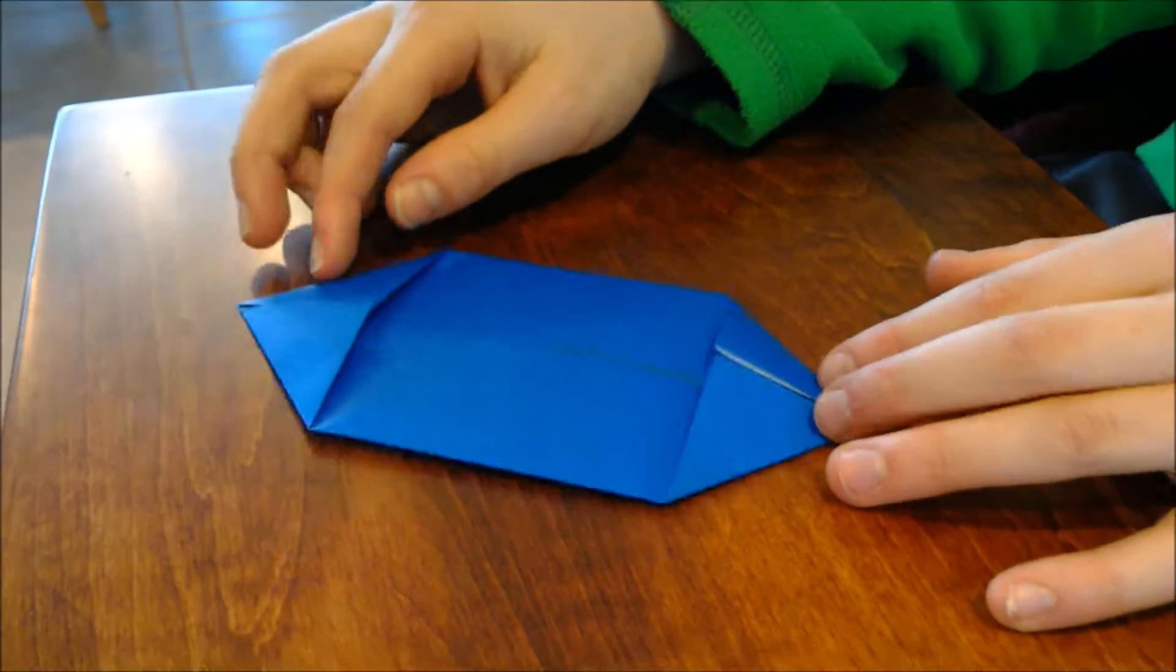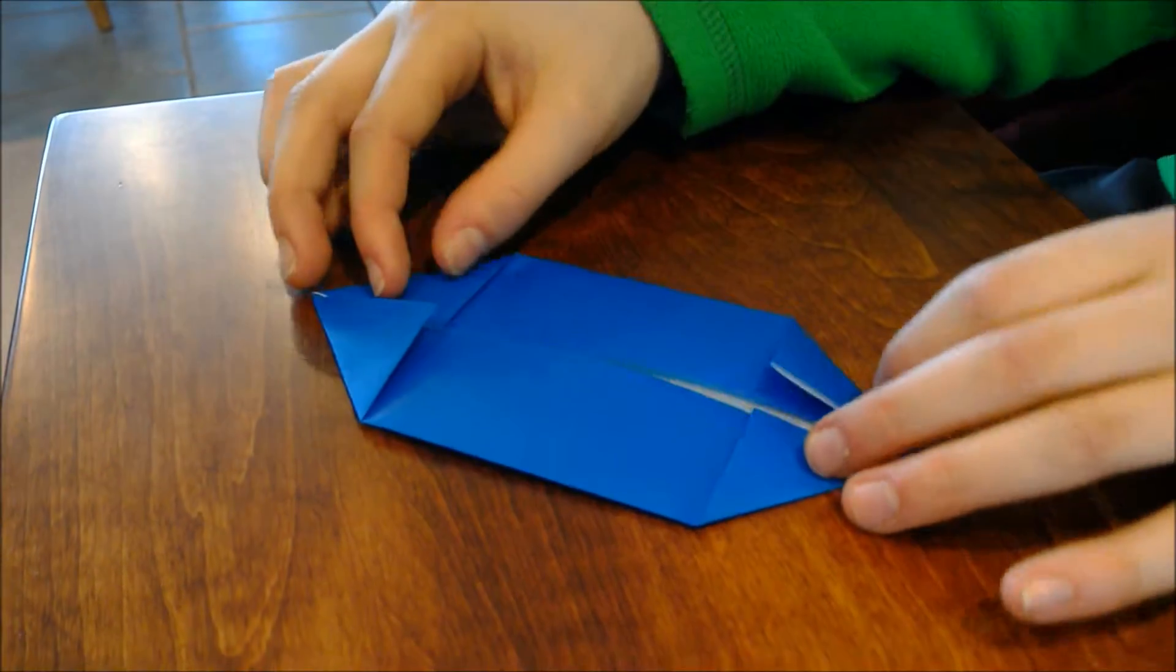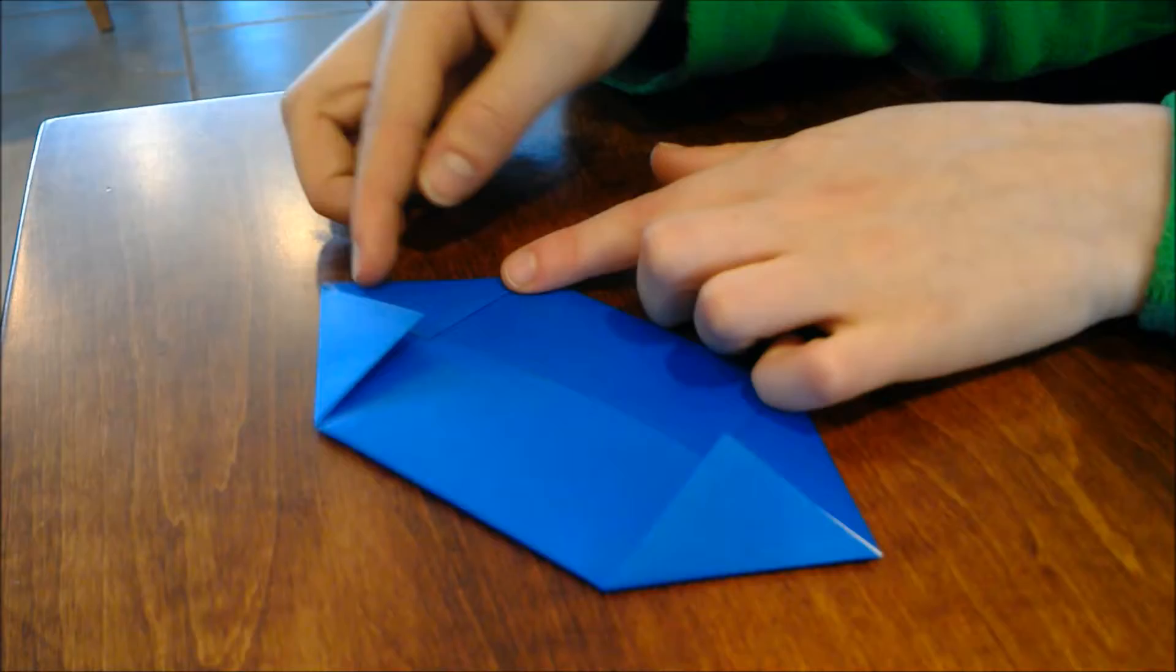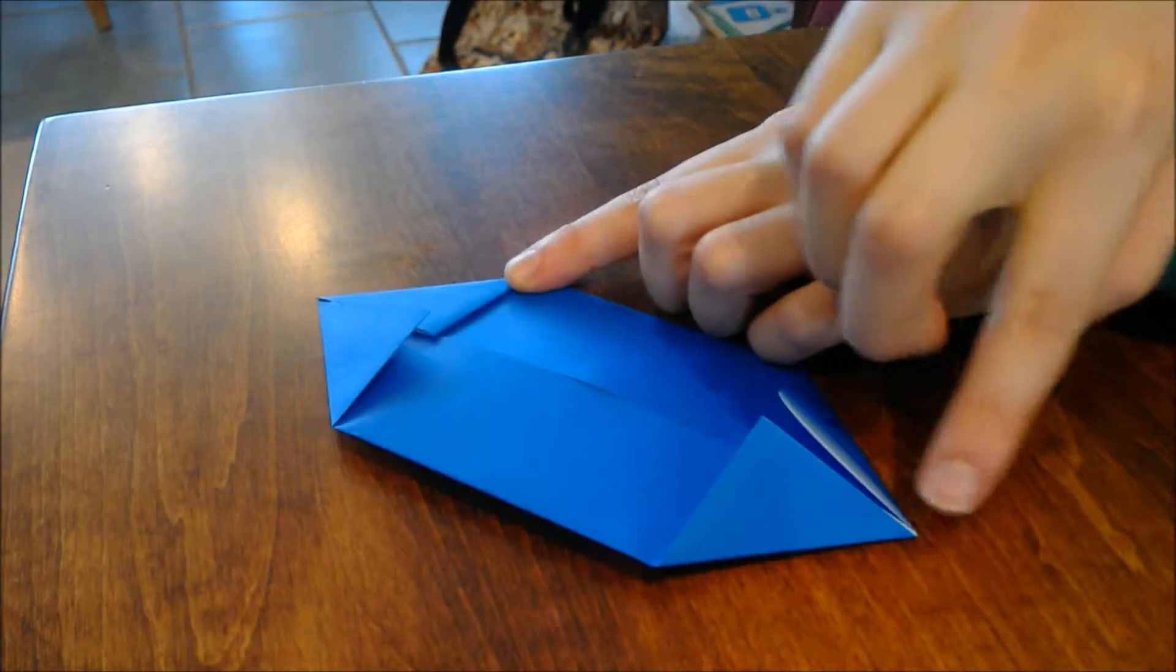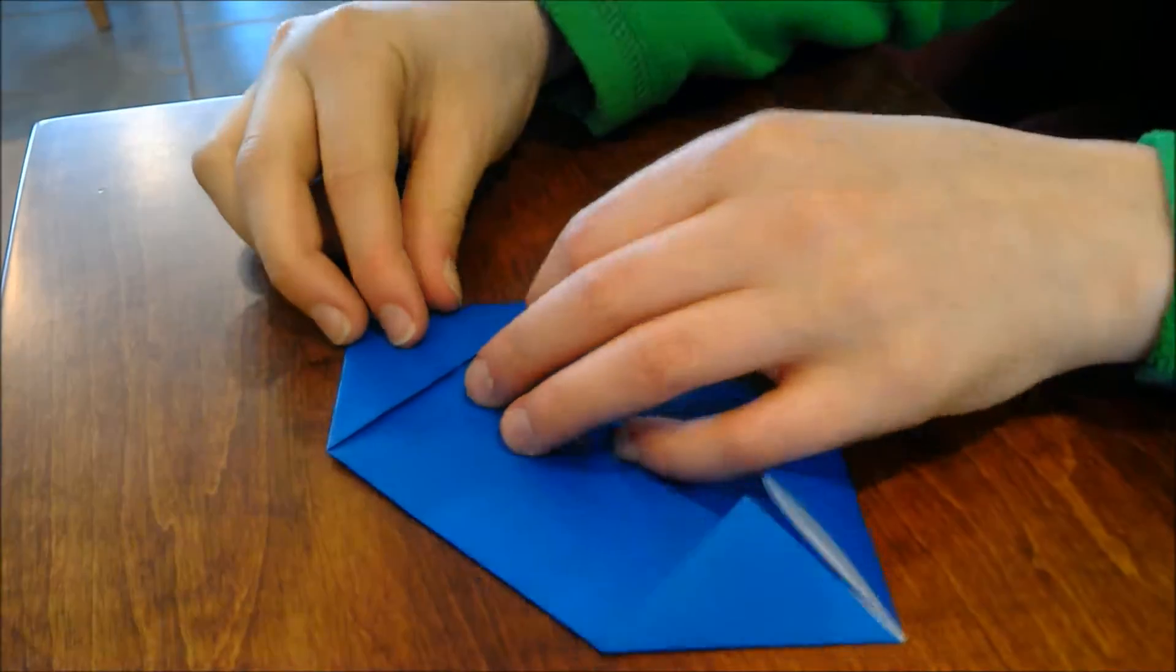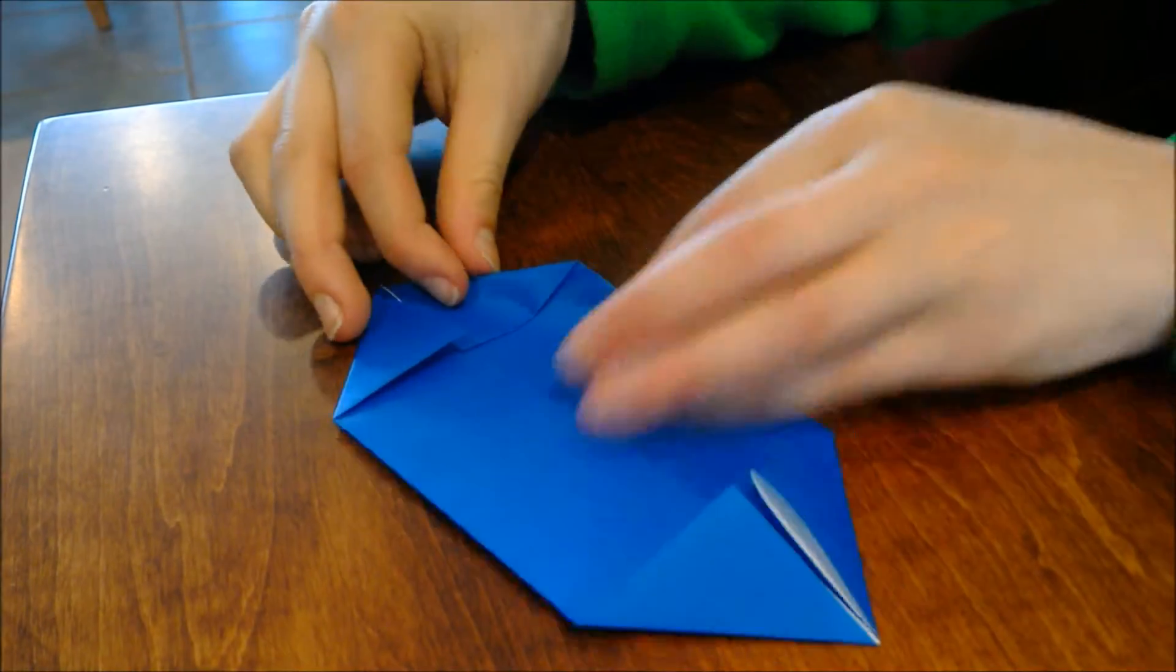So you have something that looks like this. Then again, you're going to take these side edges, diagonal side edges, and fold them into the center like this.